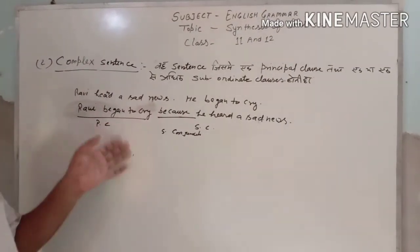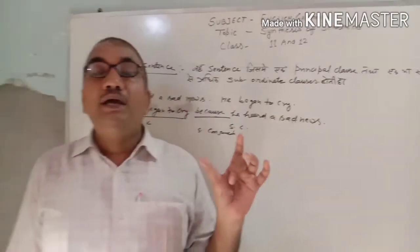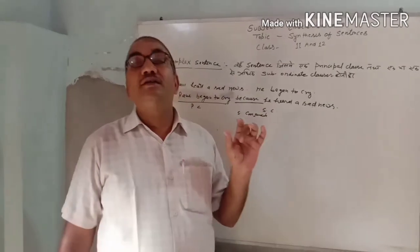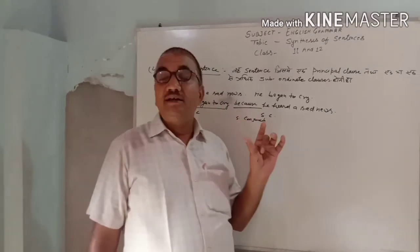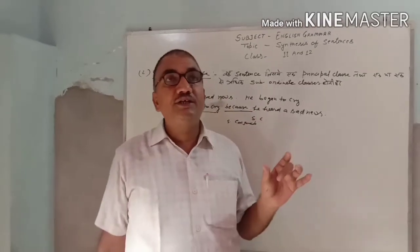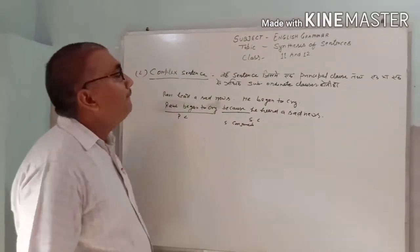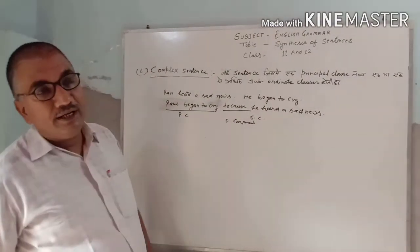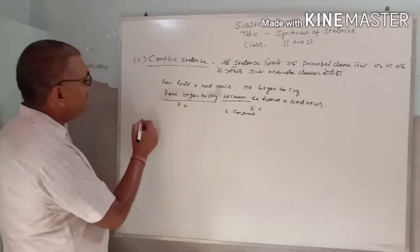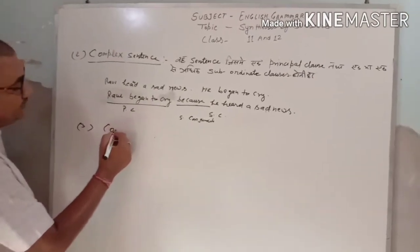So in complex sentences, we use a subordinating conjunction to join the subordinate clause to the principal clause.